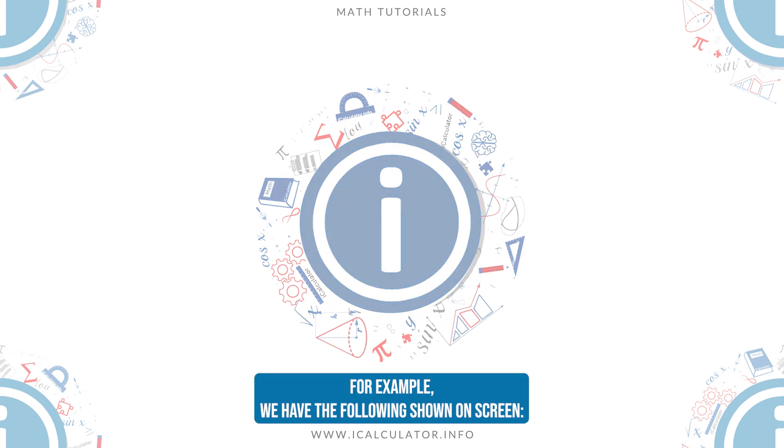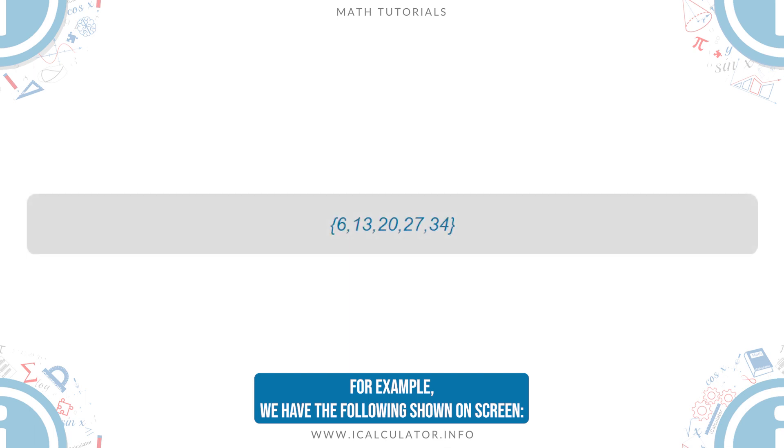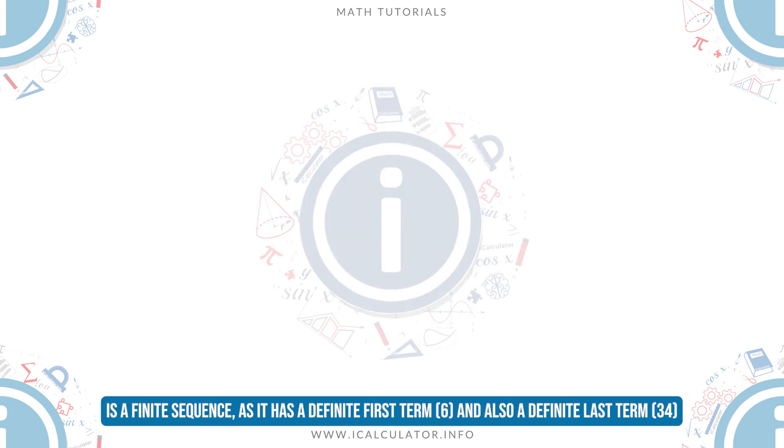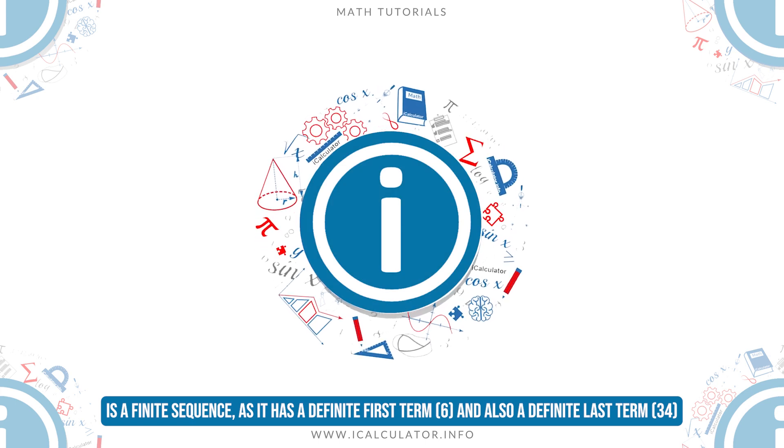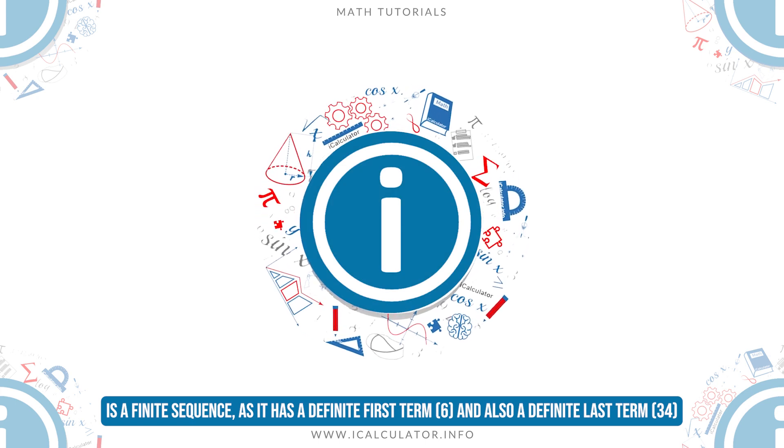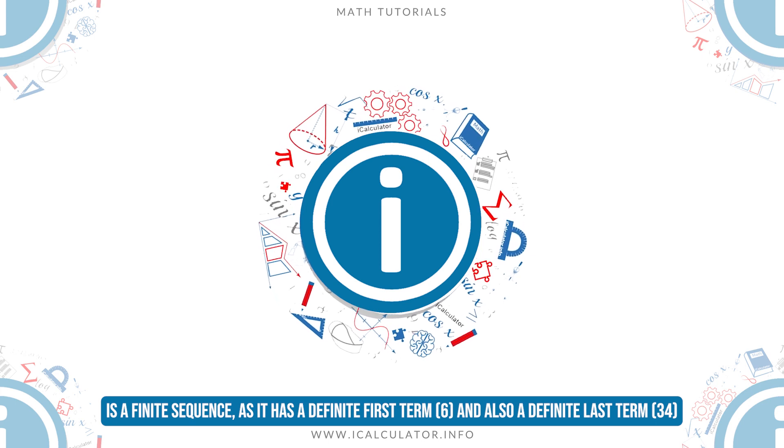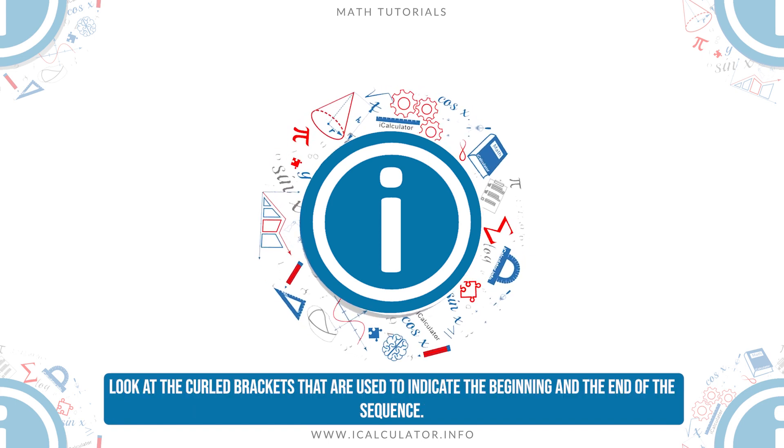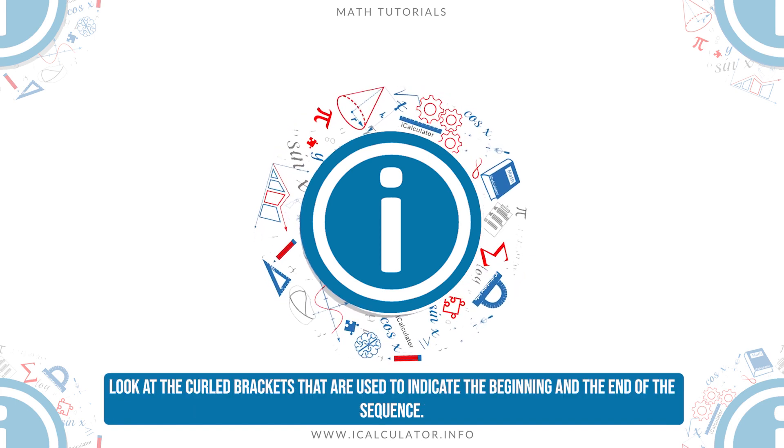For example, we have the following shown on screen. This is a finite sequence, as it has a definite first term, 6, and also a definite last term, 34. Look at the curled brackets that are used to indicate the beginning and the end of the sequence.